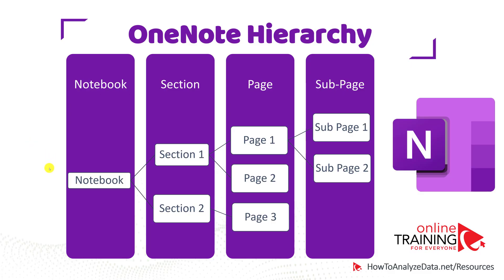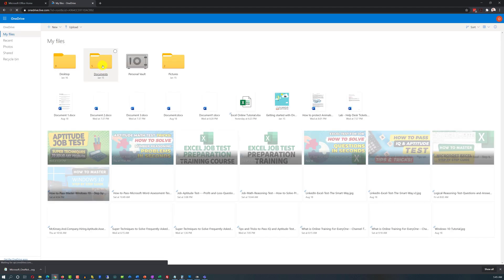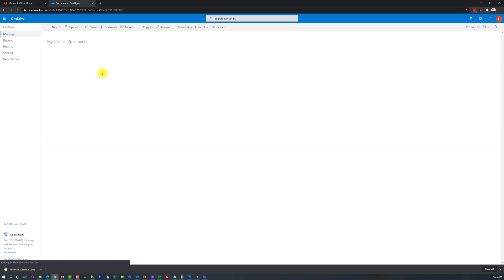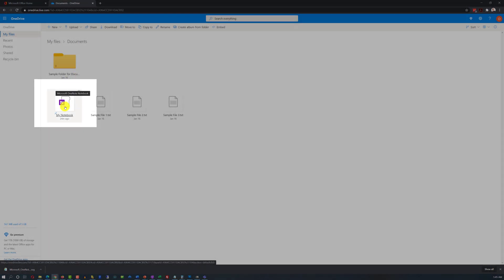Because OneNote provides so much flexibility in how you can organize your data, you would have to decide how you would like to build a hierarchy. A notebook is a file which is stored on your OneDrive. If I navigate from OneNote to OneDrive and then click on Documents, I can see my file right here in the list.